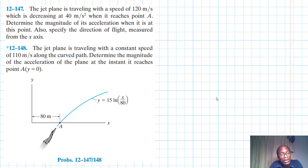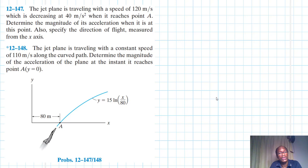Welcome to this interesting screencast. The problem reads: a jet plane is traveling with a speed of 120 meters per second, which is decreasing at 40 meters per second squared when it reaches point A. Determine the magnitude of the acceleration when it is at this point, and also specify the direction of flight measured from the axis.